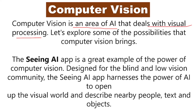Let's explore some of the possibilities that computer vision brings. Let us see how a computer machine can view objects. A computer doesn't have any eyes, so let us see how it will be able to see objects.